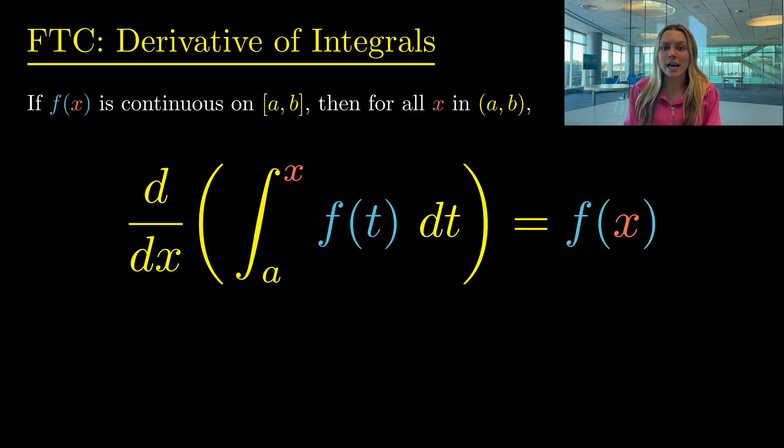A few things to keep in mind before our examples. First, in order to use FTC, the constant a has to be the lower limit, and the variable x has to be the upper limit.